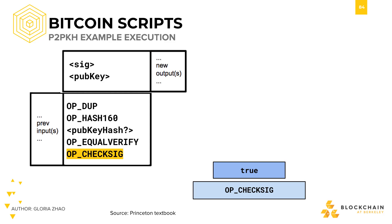Lastly, OP_CHECKSIG checks the validity of the signature with a given public key. If it is valid, then it returns true. And finally, since the final return value is true, we know that the transaction was valid, and so the transaction will go through.